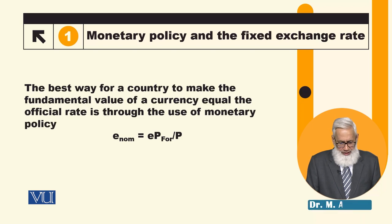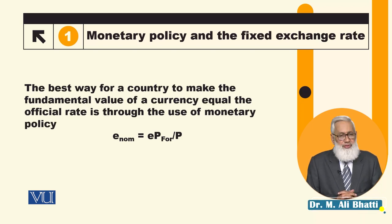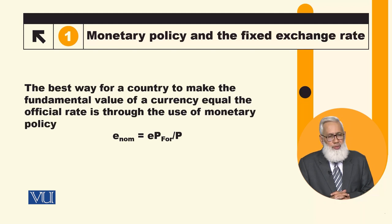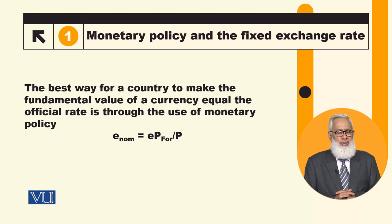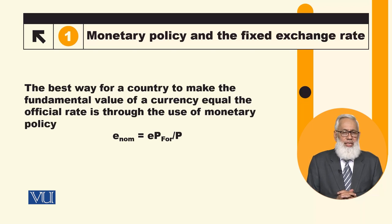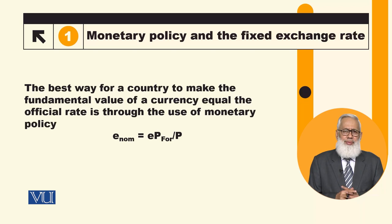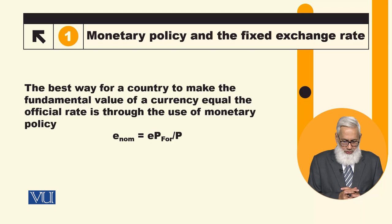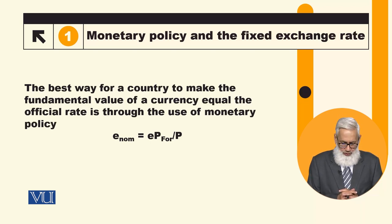The best way for a country to make the fundamental value of a currency equal the official rate is through the use of monetary policy. In the last module we saw that the official rate can be different from the fundamental value, which is determined by demand and supply. If the fundamental value is different from the official rate, we can equalize them.